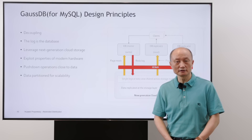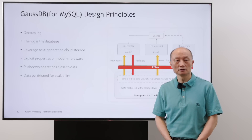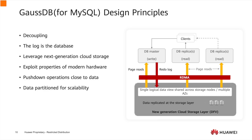We already saw that the traditional database design does not work well in a modern cloud environment. We need to leverage cloud technology and modern storage systems. The design of GaussDB follows the following principles. The first is decoupling — the separation of storage and compute, so storage and compute can scale independently.